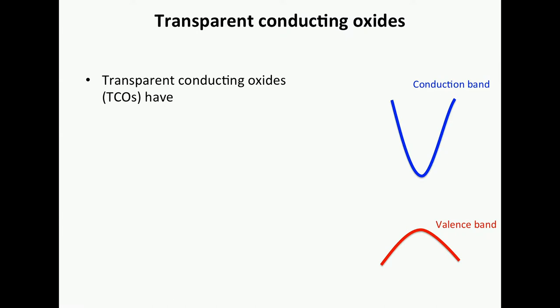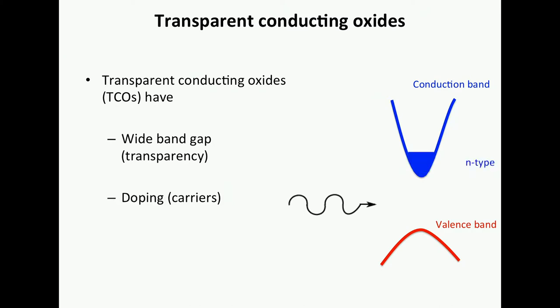You basically take an oxide with a large enough band gap that gives you transparency. Then how do you get conductivity? You just dope it — you can dope it N-type or P-type. These materials are known. They mass-produce on the N-type TCOs; this is a big industry. Indium oxide, for instance, is a very large transparent conducting oxide.